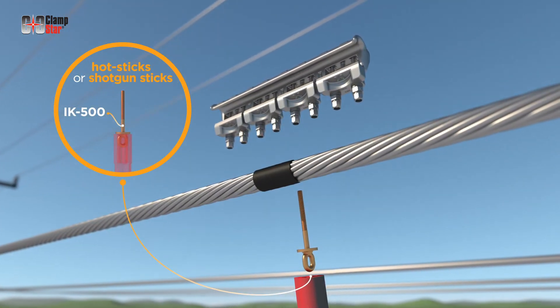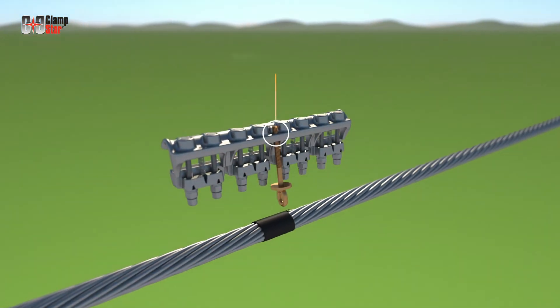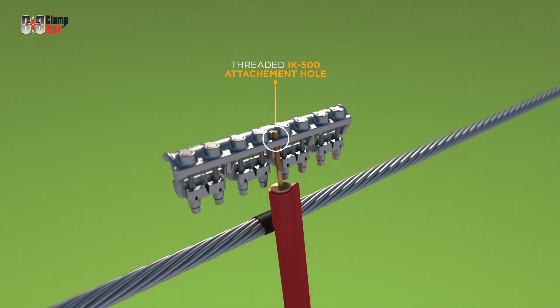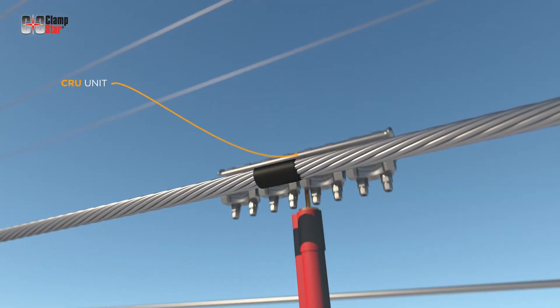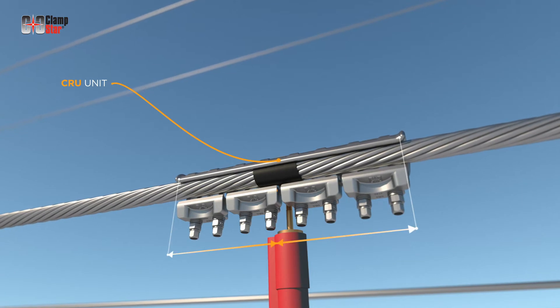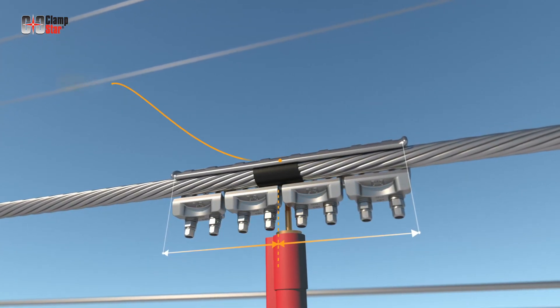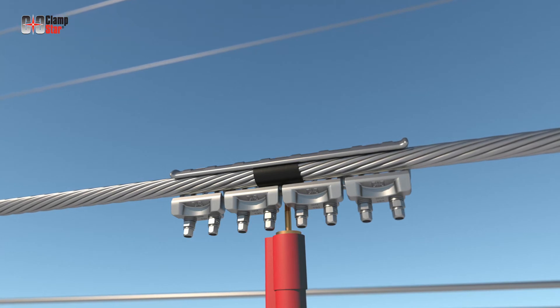Optional installation kits are needed for all stick installations and are attached by utilizing the threaded hole on the CRU unit. Place the CRU unit on the conductor with the damaged area centered between the left and right side of the unit. Once positioned on the conductor and to stabilize the ClampStar unit in place, simply leave the hot stick attached until installation is completed.